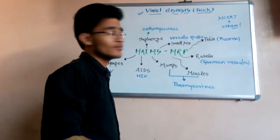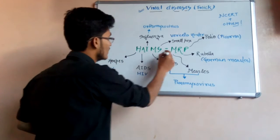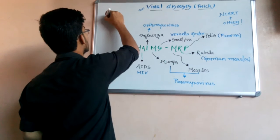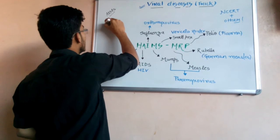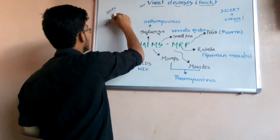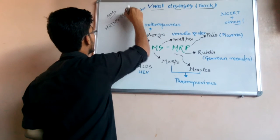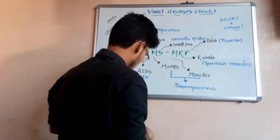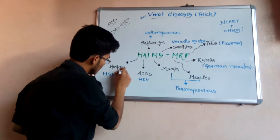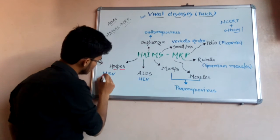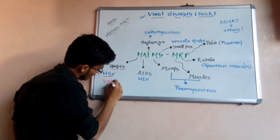The simple trick to learn viral diseases is AIMS MRP. You all know very well about AIMS—that is, All India Institute of Medical Sciences. You just have to replace one word here. So the trick is AIMS MRP, where H means herpes. This is a very common disease which is caused by herpes simplex virus.